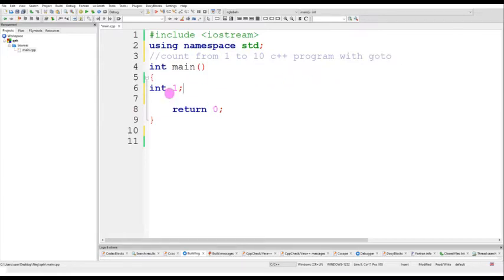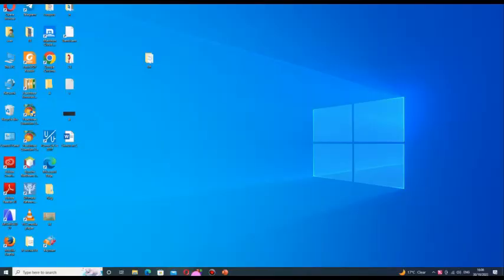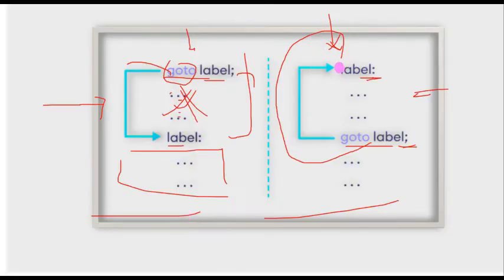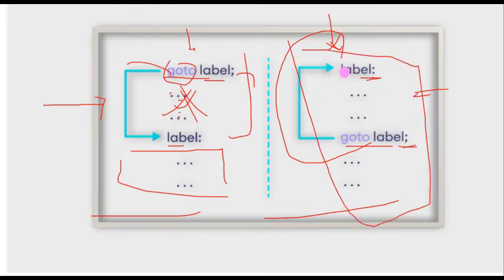So let me declare int i, the variable equals to one. Then let me give the general structure. If I want to write the program with the backward syntax, there is a label. This label is given by the programmer; I can give any type of label name which must be a valid identifier.